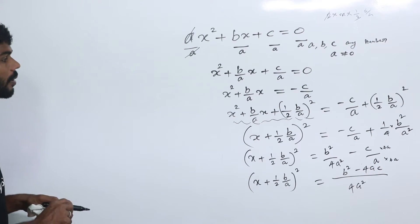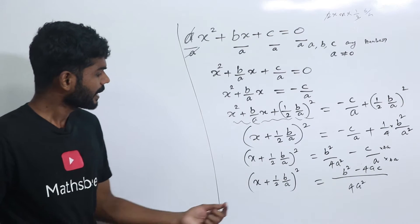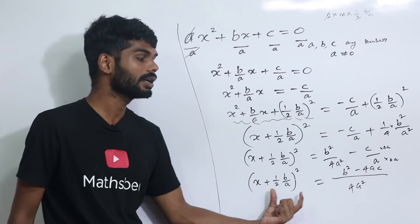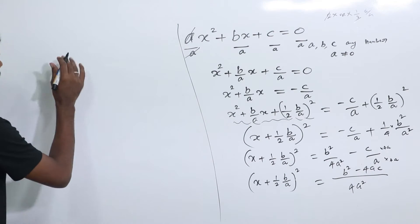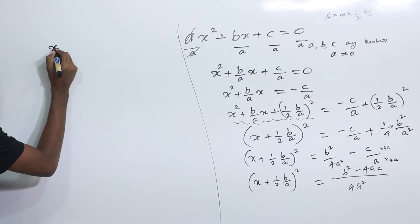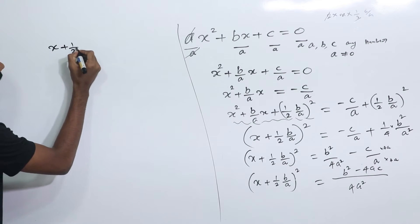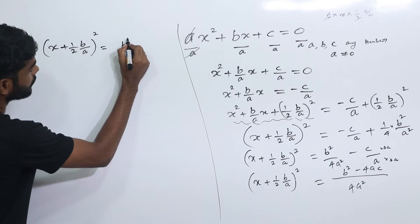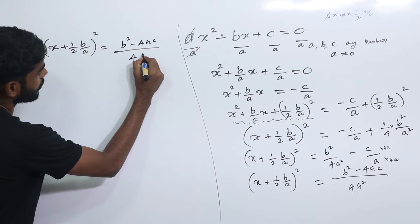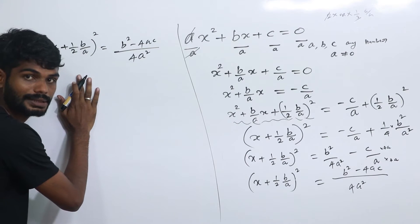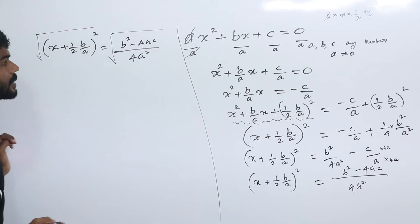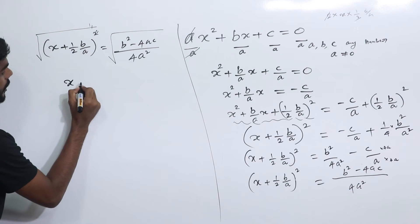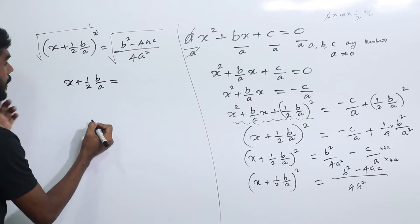Let's continue. We take the square root of both sides. So x plus half into b by a equals plus or minus the square root of b squared minus 4ac by 4a squared, taking square root on both left hand side and right hand side.